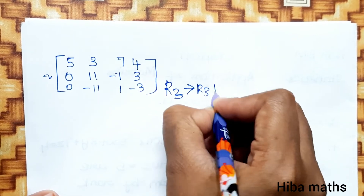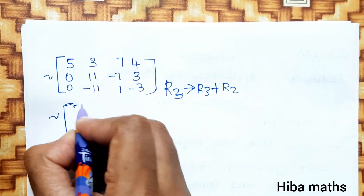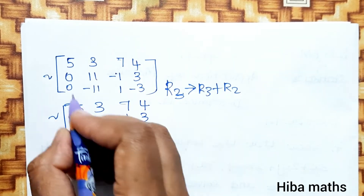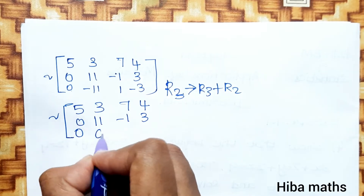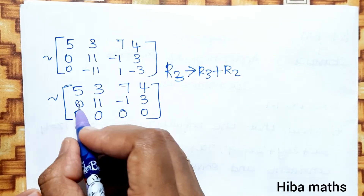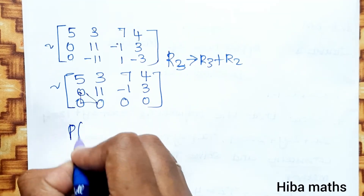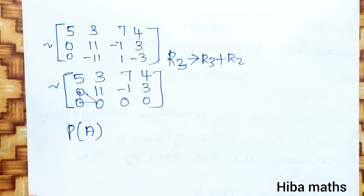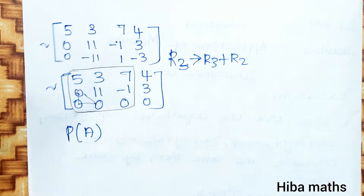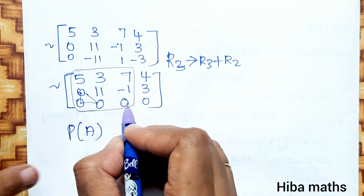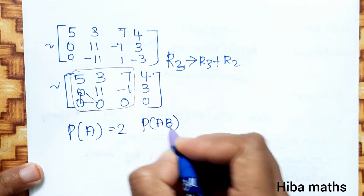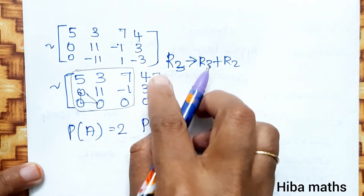R3 changes: R3 plus R2. The resulting matrix in row echelon form is: Row 1: 5, 3, 7, 4; Row 2: 0, 11, minus 1, 3; Row 3: 0, 0, 0, 0. This is the row echelon form. Now we find the rank: the third row of matrix A is all zeros, so the number of non-zero rows is 2. Therefore rank of A equals rank of [A|B] equals 2.